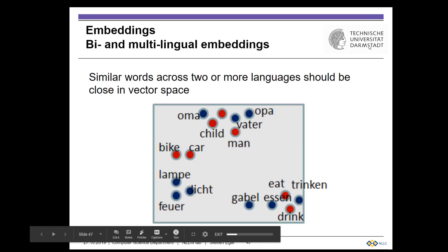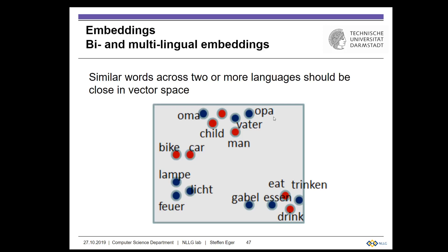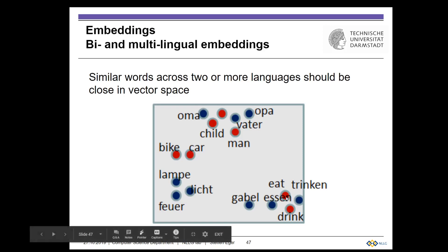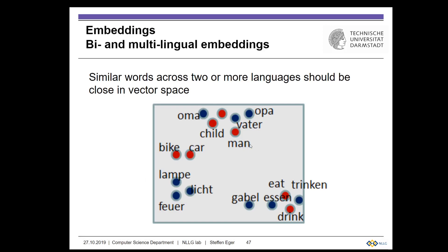As a brief interlude: in bilingual and multilingual embedding spaces, words from two languages are mapped into the same vector space. Not only are monolingually similar words such as 'man' and 'child,' or 'bike' and 'car,' close to each other, but cross-lingually similar words such as translations are also similar in the vector space. This extends to whole sentence representations as well.